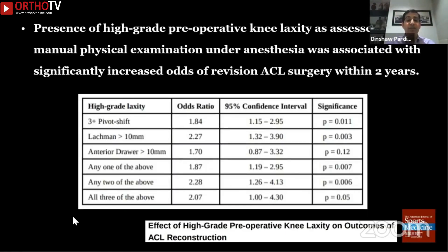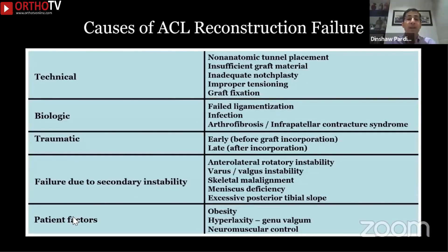The second patient factor is preoperative knee ligament laxity — patients who are hyperlax have a significantly higher rate of failure. For these high-risk individuals, you need to think of something additional beyond the ACL reconstruction to prevent failure.